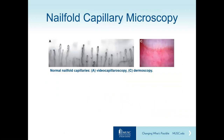Normal capillary loops in the nail bed appear as very delicate, regularly spaced hairpin-shaped loops, as seen through a video capillaroscope. With a dermatoscope, they appear similarly — very regularly arrayed at the nail-fold margin.